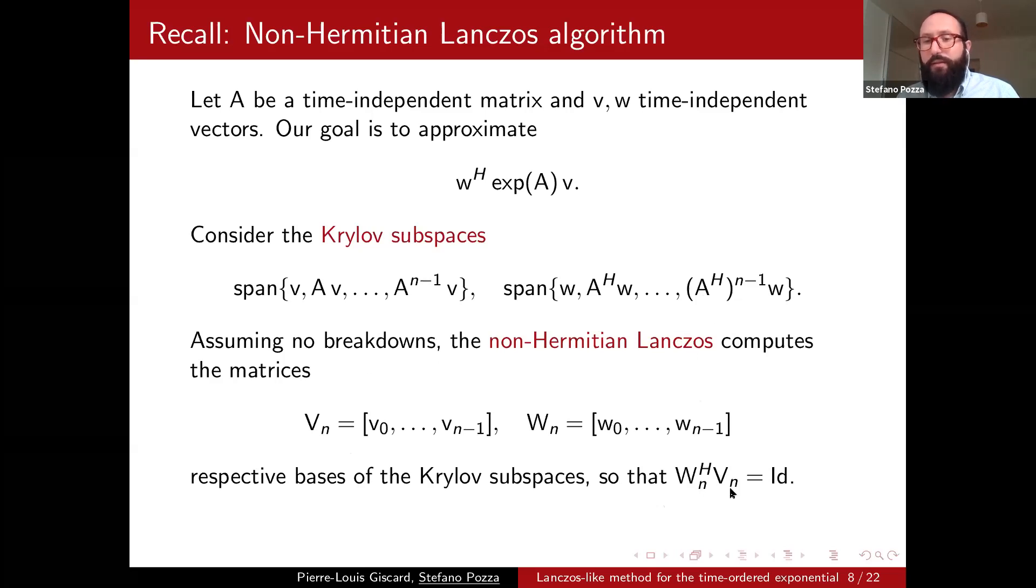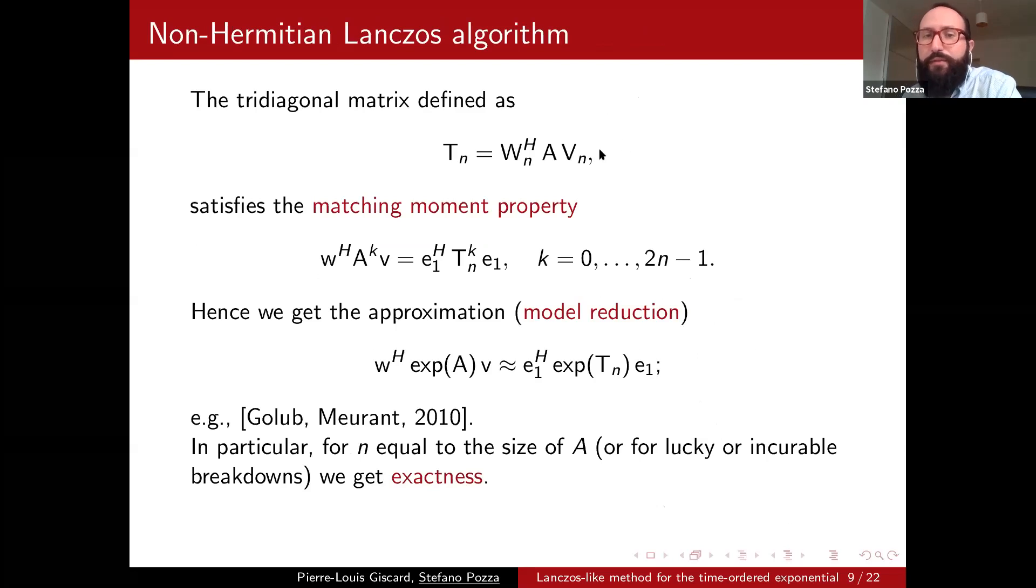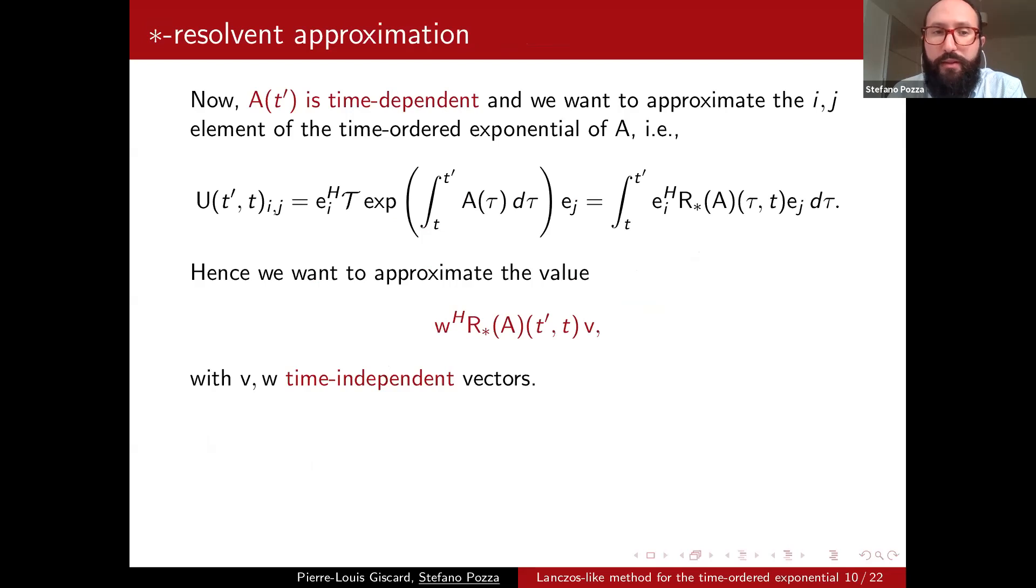And then use the non-Hermitian Lanczos to compute two bases for these Krylov spaces so that they are bi-orthonormal. So VN Hermitian transpose of WN times VN is equal to the identity. And once you have done it, if you define a matrix TN that is the projection of the original matrix onto the Krylov spaces, then you can show that TN is tridiagonal. So first property we really want to have, and then has the matching moment property, which means that you can see is really what we wanted to do, that these powers have the same up to the N minus one, and actually they are the same when N is equal to the size of A. So then this justifies the approximation of the exponential of A by the exponential of T.